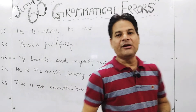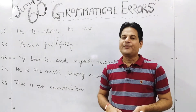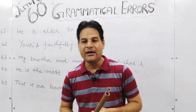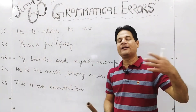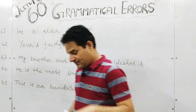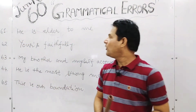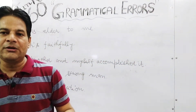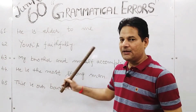'Elder' is used within family relationships — your brother may be elder to you. 'Elder' pertains to age within family, while 'older' is used for anything to show how old something is, how long it has existed. So: 'He is older than I' or in colloquial English 'older than me.' So 'older' takes 'than' and 'elder' takes 'to.' Elder to, older than.